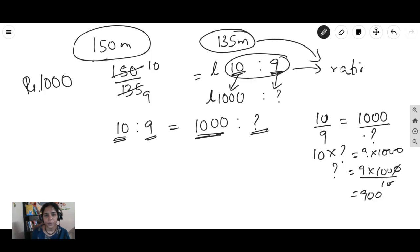10 into question mark is equal to 9 into 1000. And the question mark will be equal to 9 into 1000 by 10. That will be 900. So it will take 900 rupees to paint the shorter building.